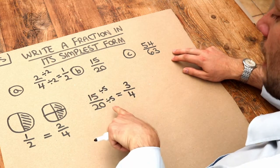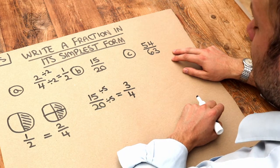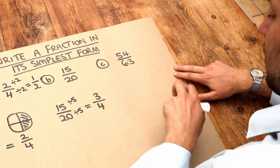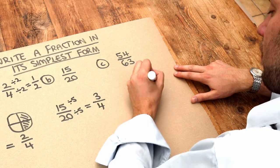Just to reiterate, whatever you divide the top number by, you also have to divide the bottom number by that same number. And then this final example, 54 over 63. What do they have as a common factor?